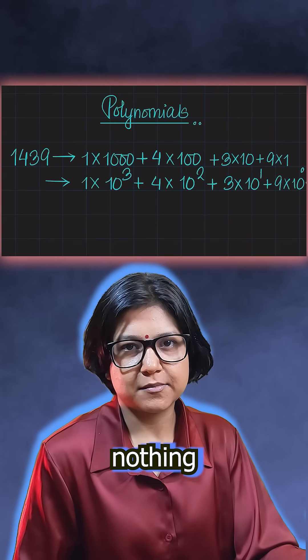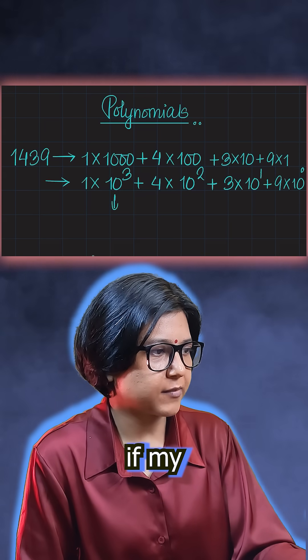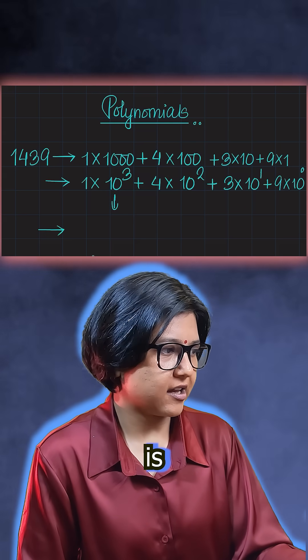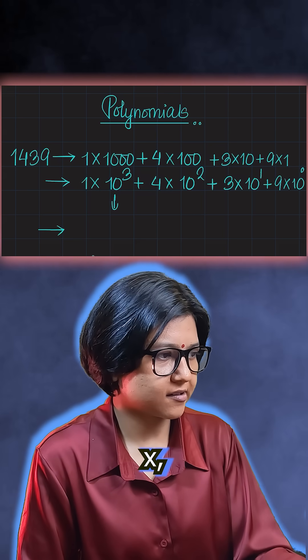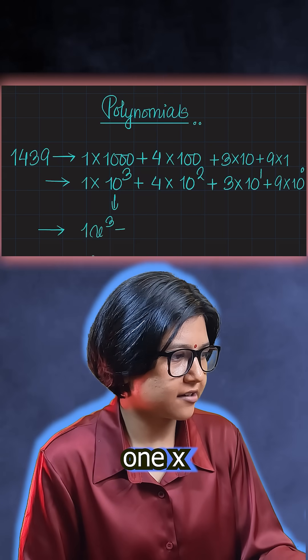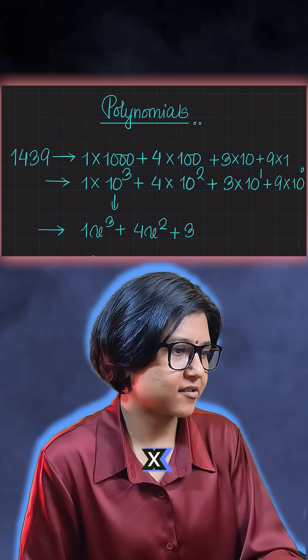Now, polynomials are nothing but you have everything in form of variables. So let's say if my variable here is 10, or if I make 10 as my variable x, then it will look like 1x cubed plus 4x squared plus 3x plus 9.